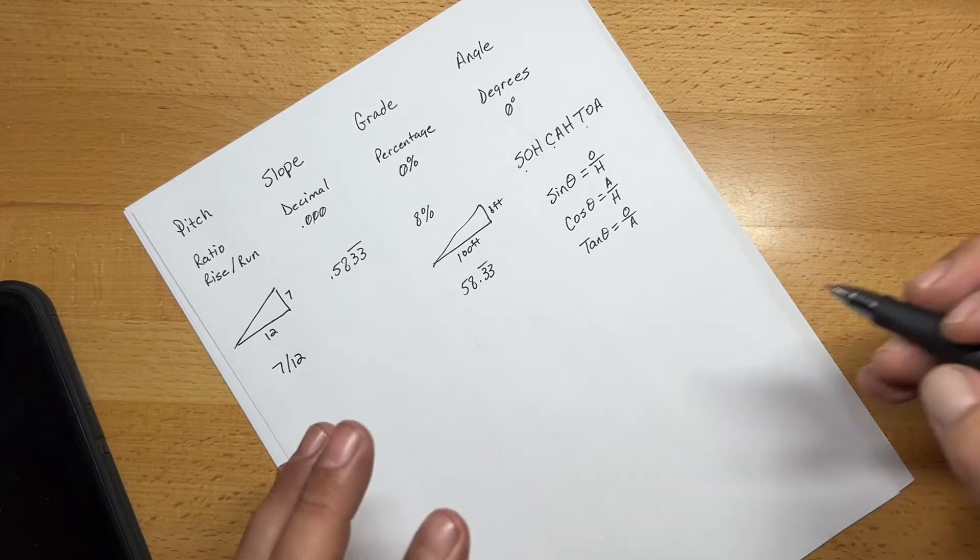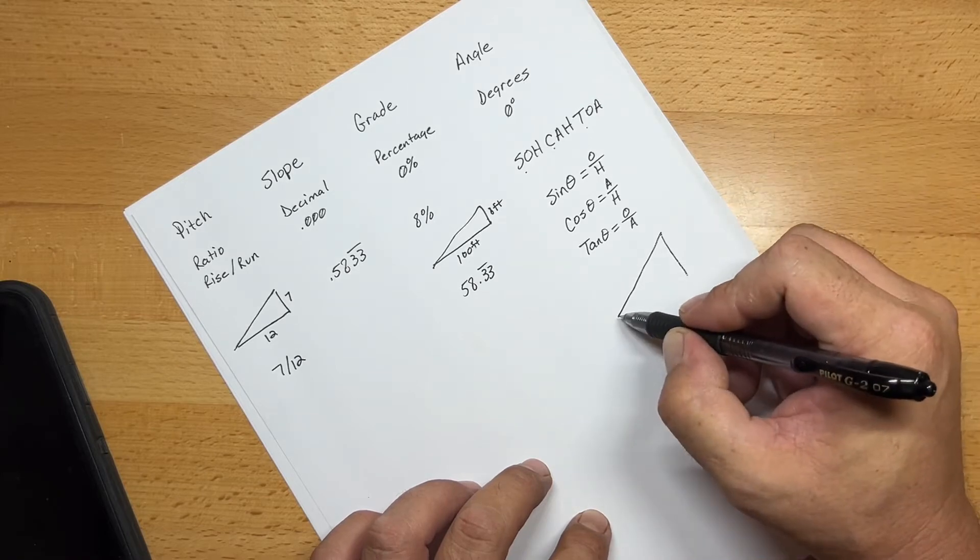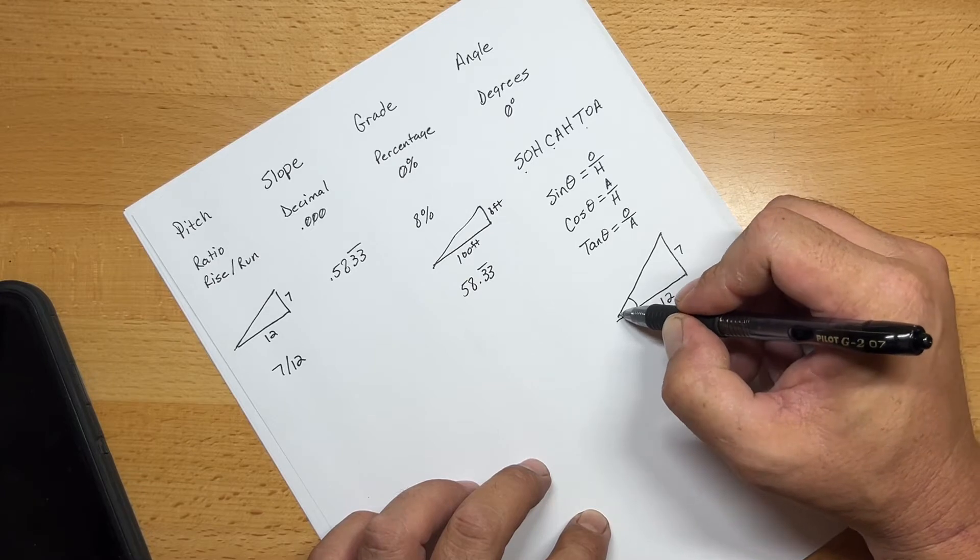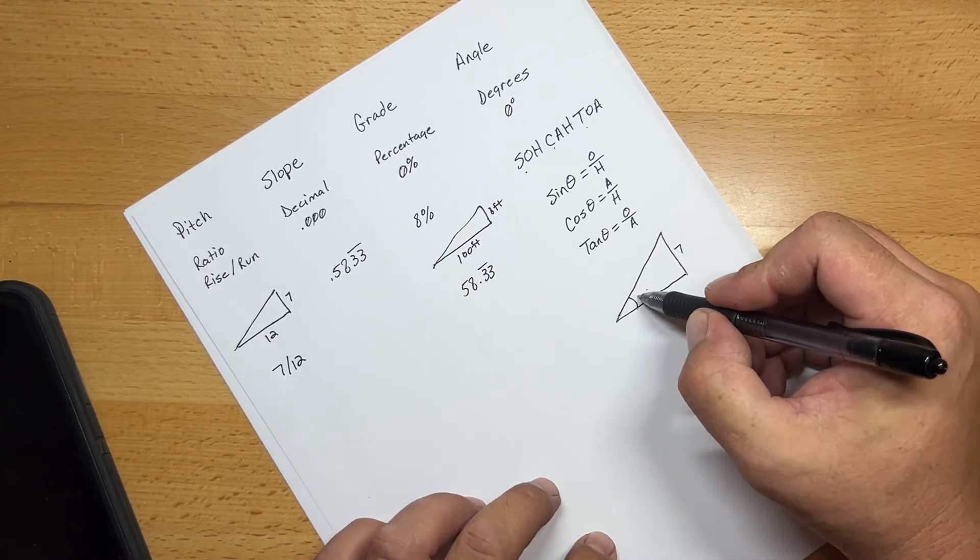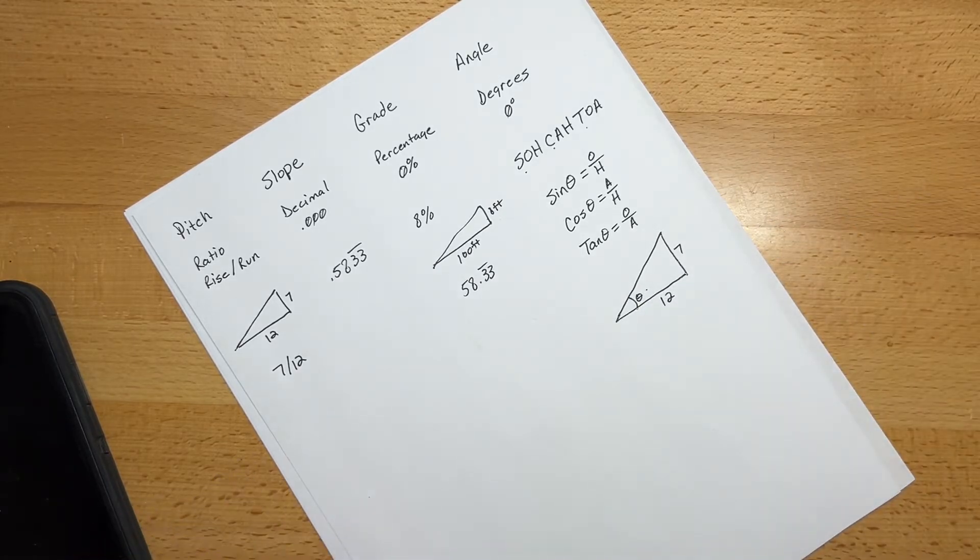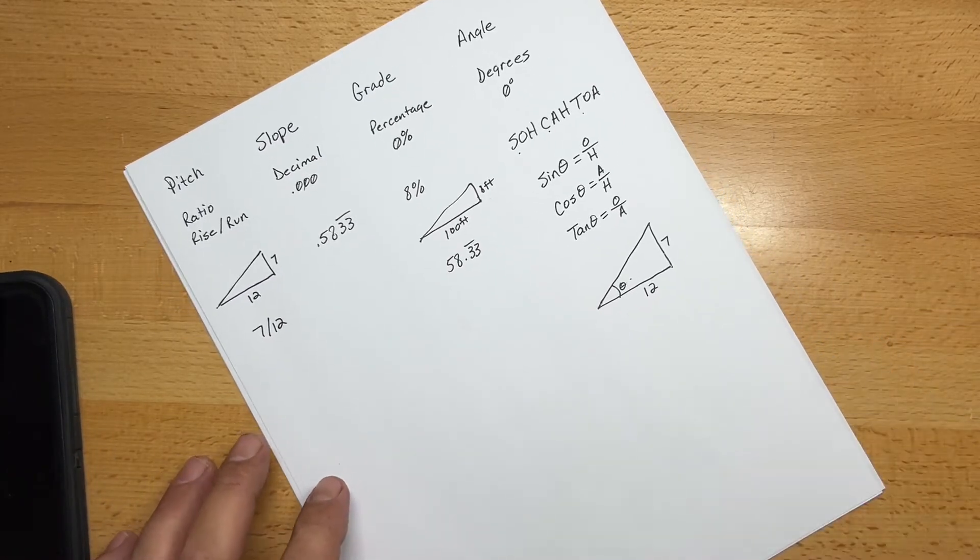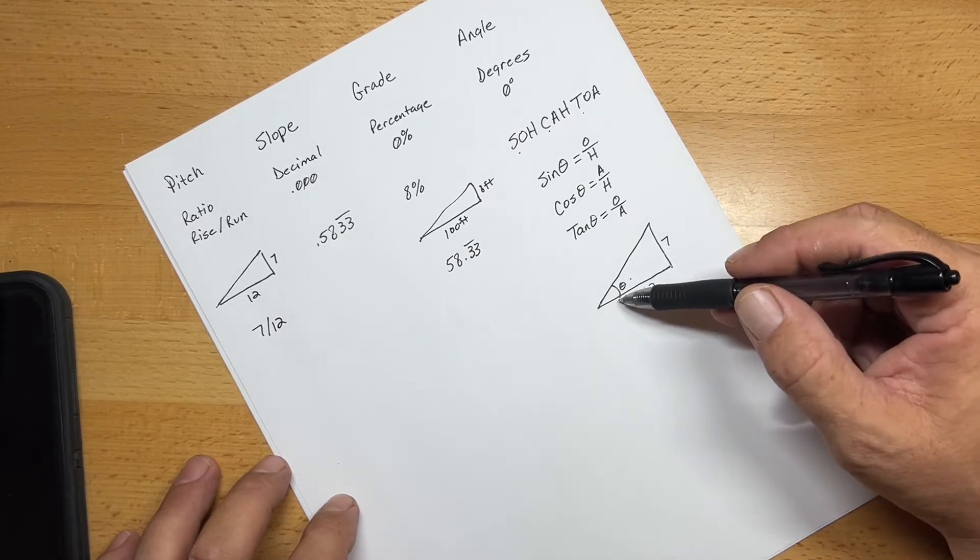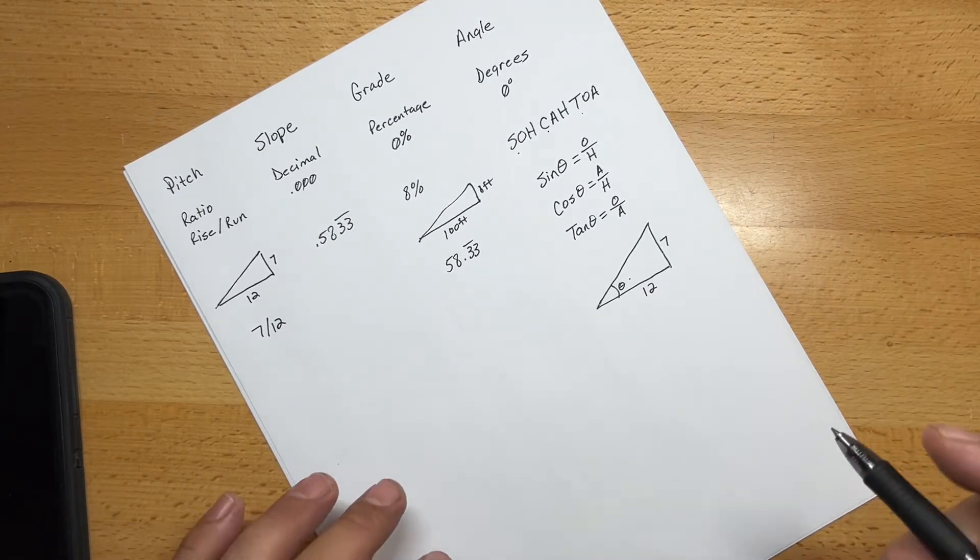So if we have our pitch here, our 7-12, so 7 and 12. Let's say we need to solve for this angle. So this is our angle theta. And all theta is is a Greek letter to distinguish an angle that we don't yet know the value of. So in this formula, we have two pieces of information. With those two pieces of information, we can calculate what this particular angle is. Of course, we have to do the inverse of that.